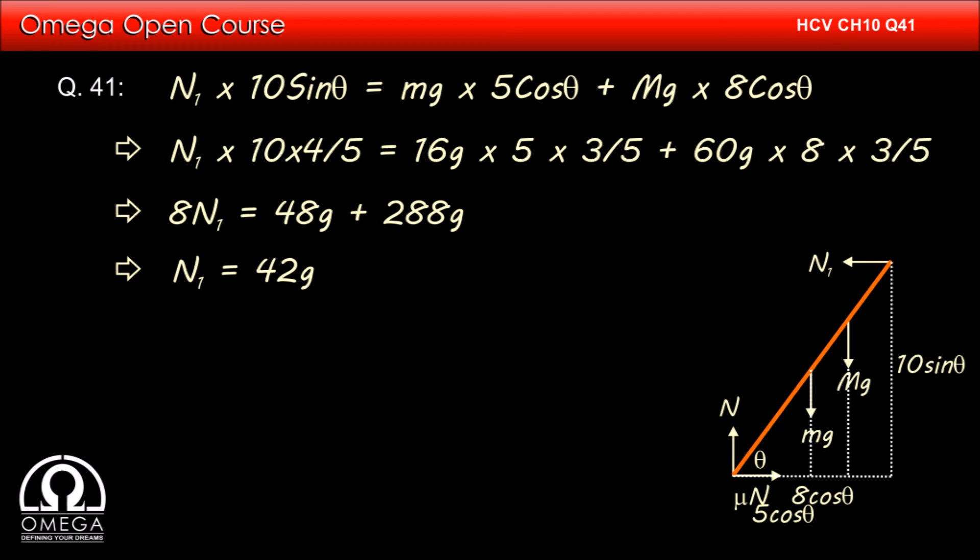If we balance the forces in horizontal direction, friction must be equal to the normal applied by the wall. Therefore, μN equals N₁. We have calculated the value of N to be 76g and N₁ to be 42g. Thus μ equals 42/76, that is 0.553.